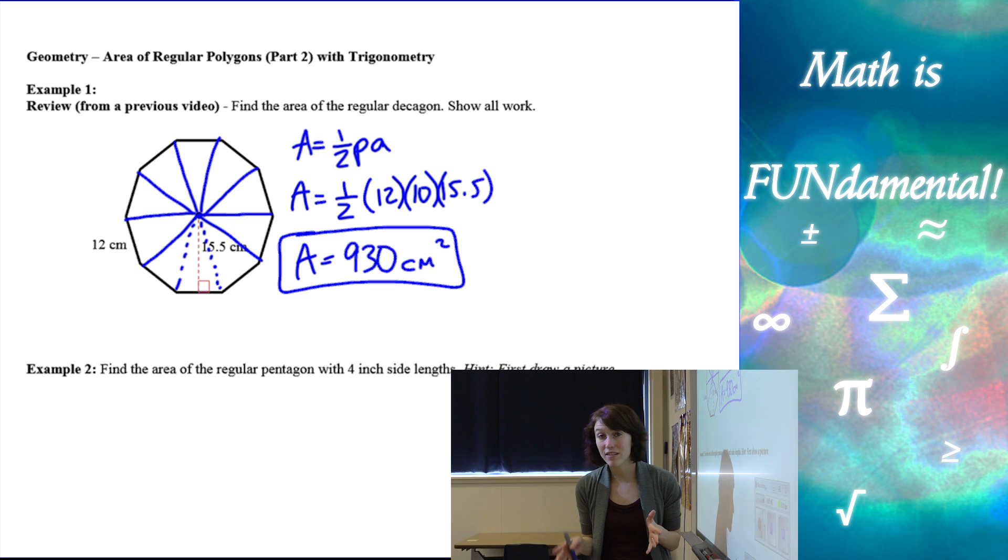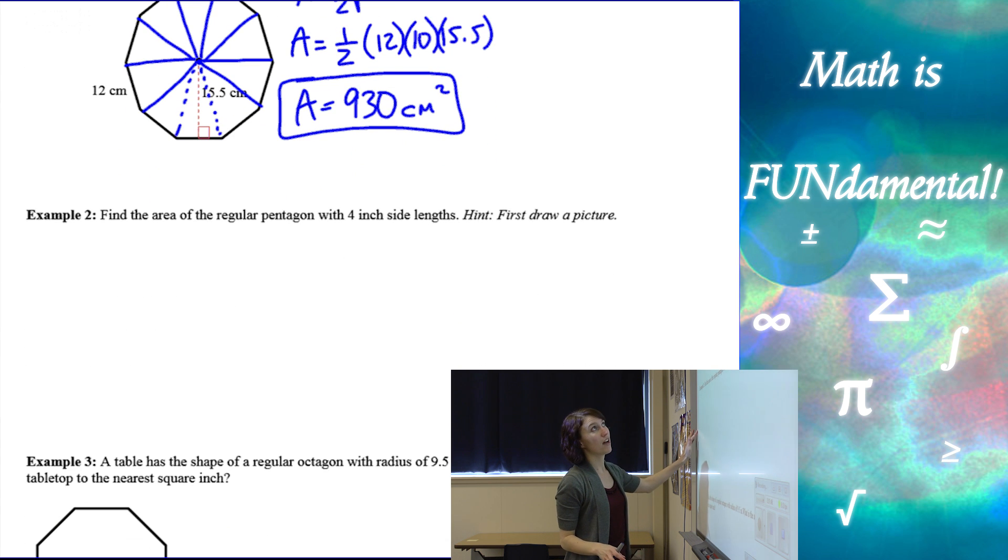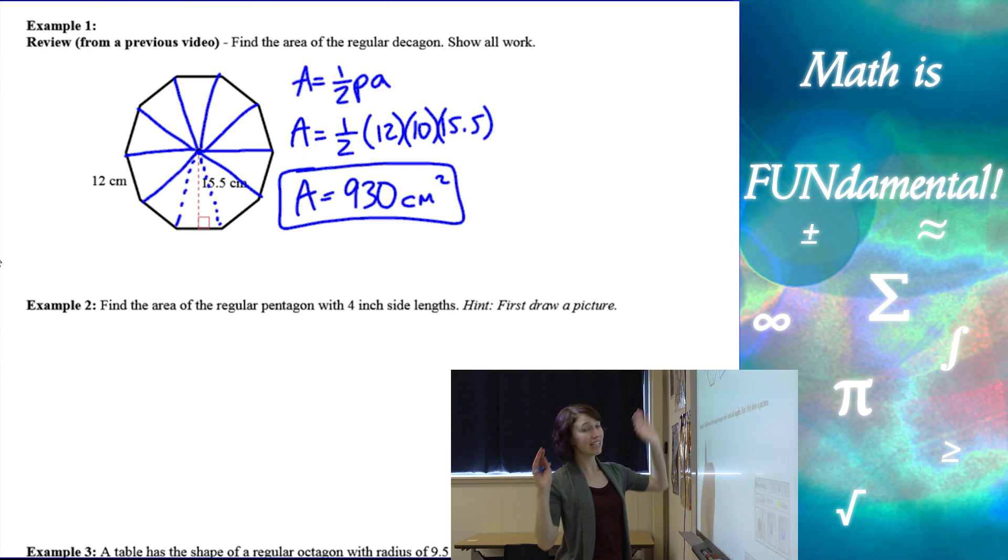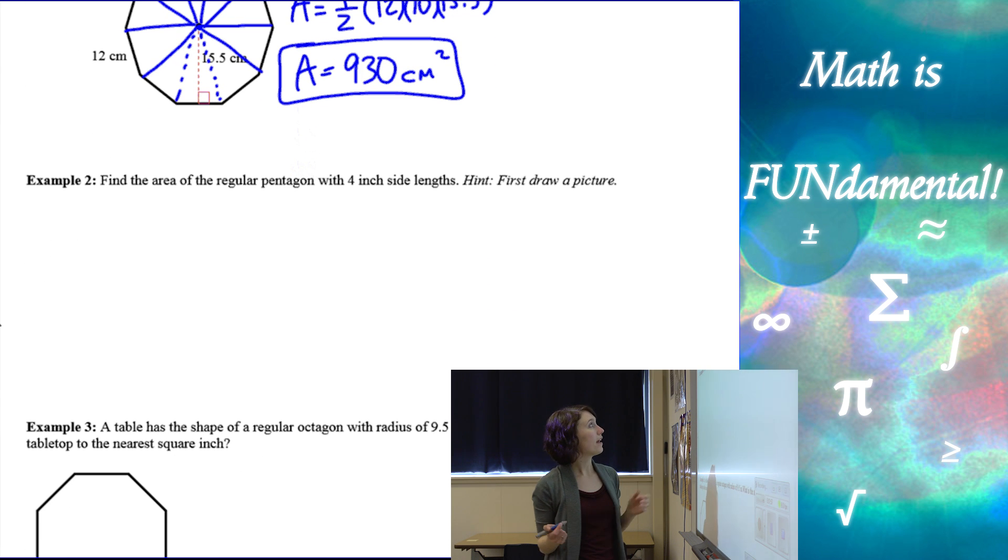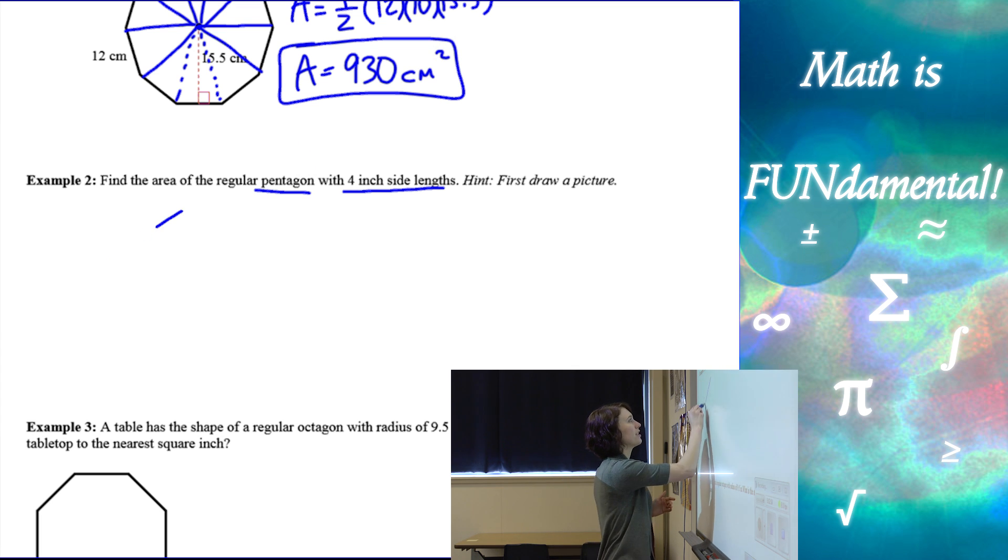So that's a really quick little example review on how to find the area of a regular polygon if they give us the side length and the apothem. So now let's look at another example. We're going to find the area of a regular pentagon with four-inch side lengths, and there's a hint, first draw a picture, always draw a picture.